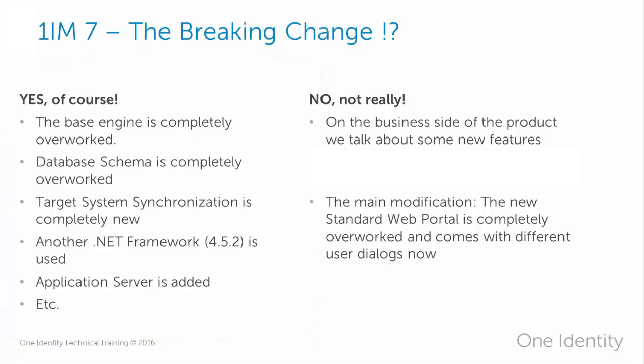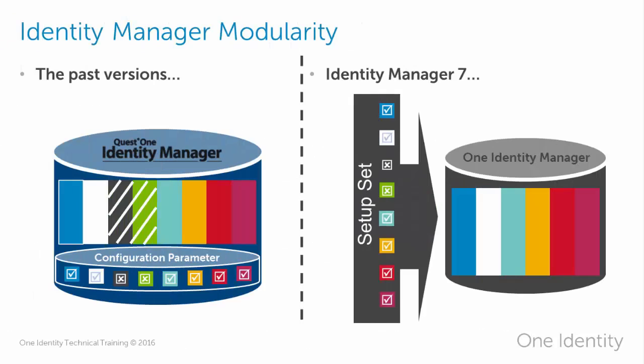I want to show you many of these technical changes in the next minutes. A lot of people are talking about modularity in version 7. What does that mean? If you have installed version 6 of the Identity Manager, you install the complete solution — the complete database schema and complete software with one setup set — regardless of whether you need only part of it or the full installation. The difference was just setting or unsetting some configuration parameters. You get the complete full-blown installation, but the unused parts are simply deactivated.